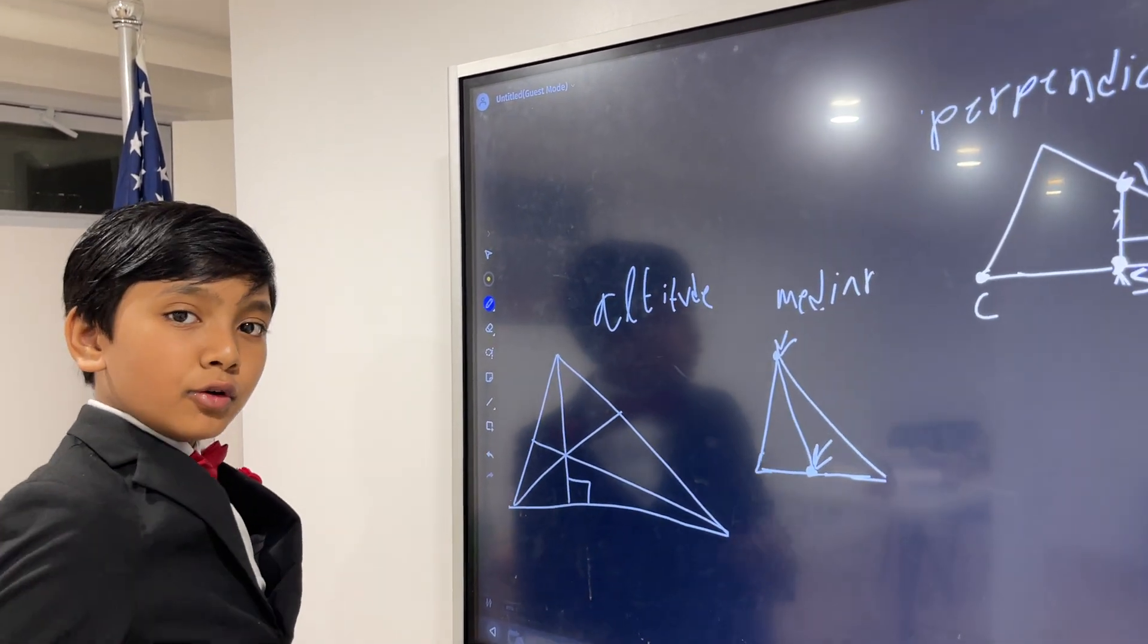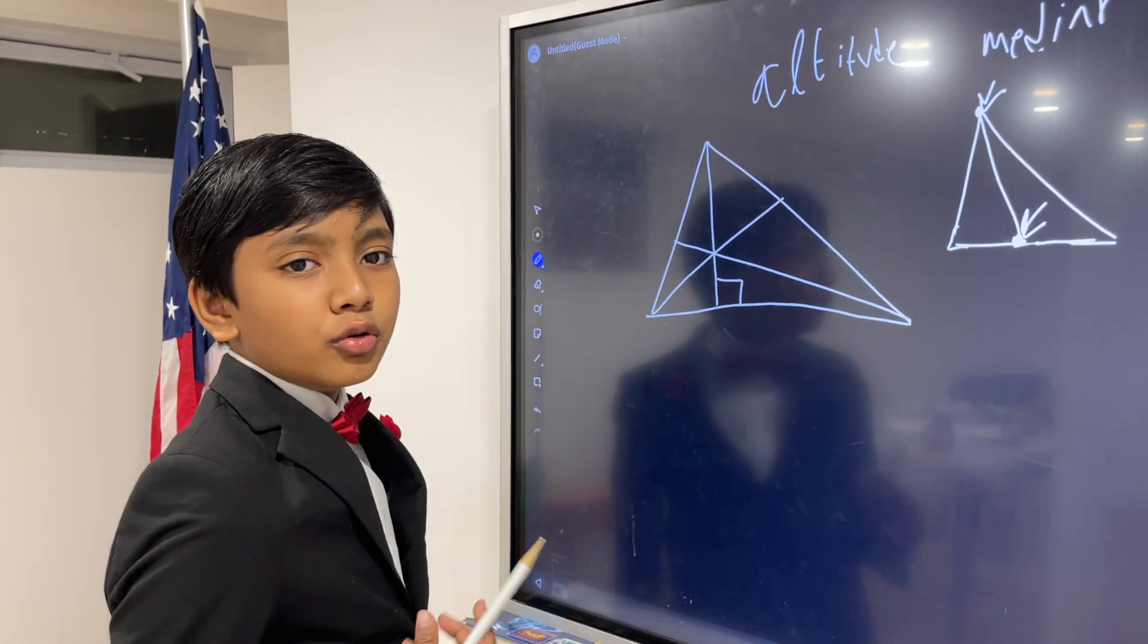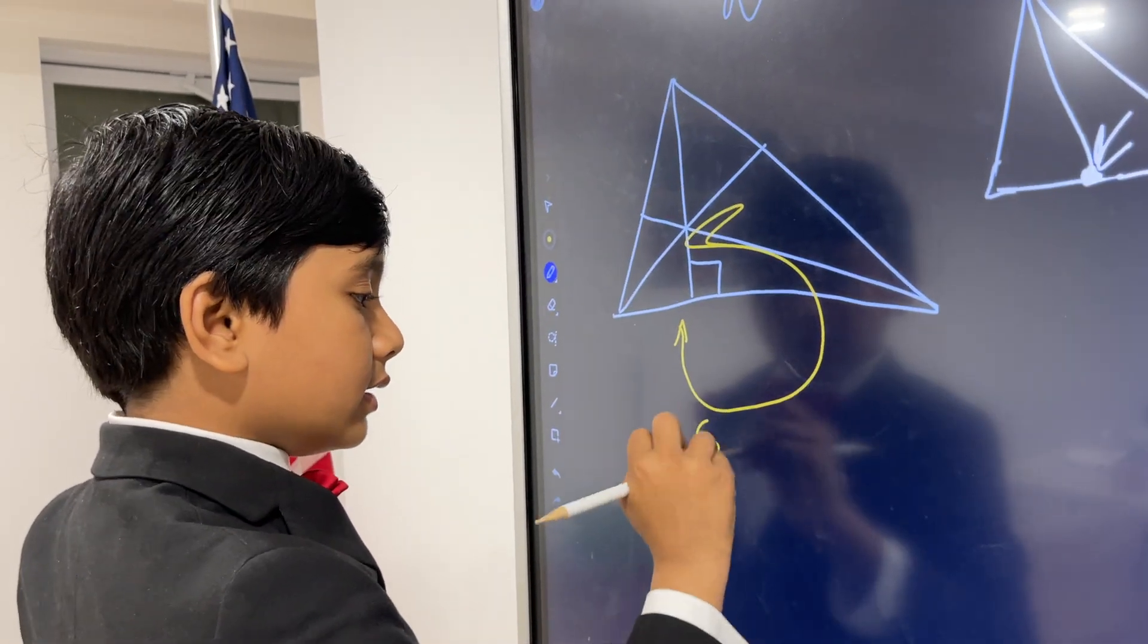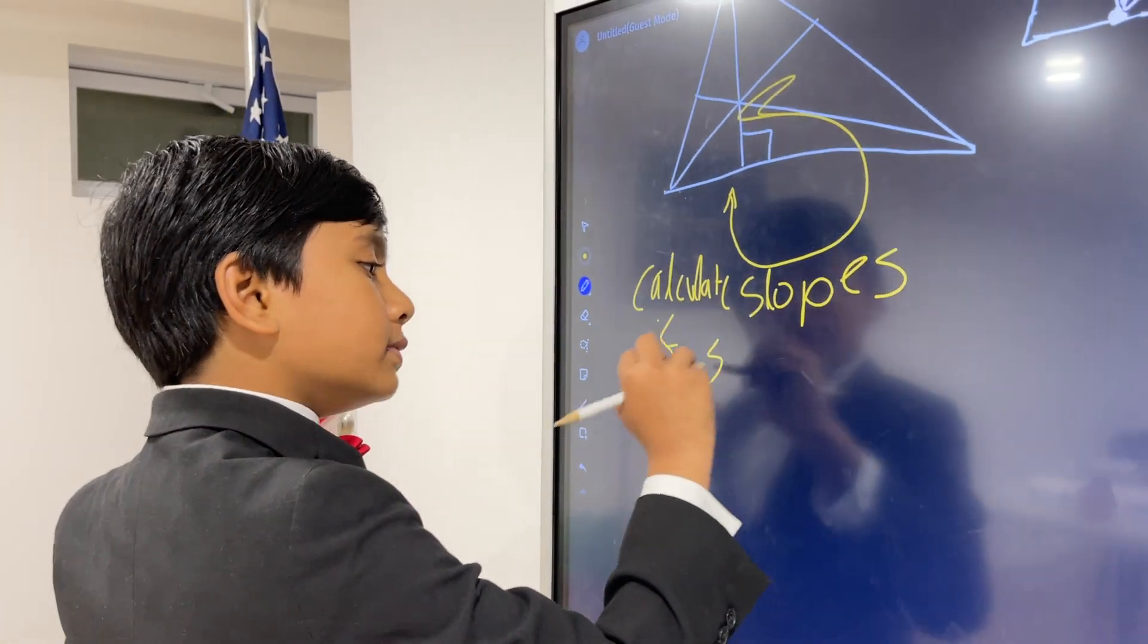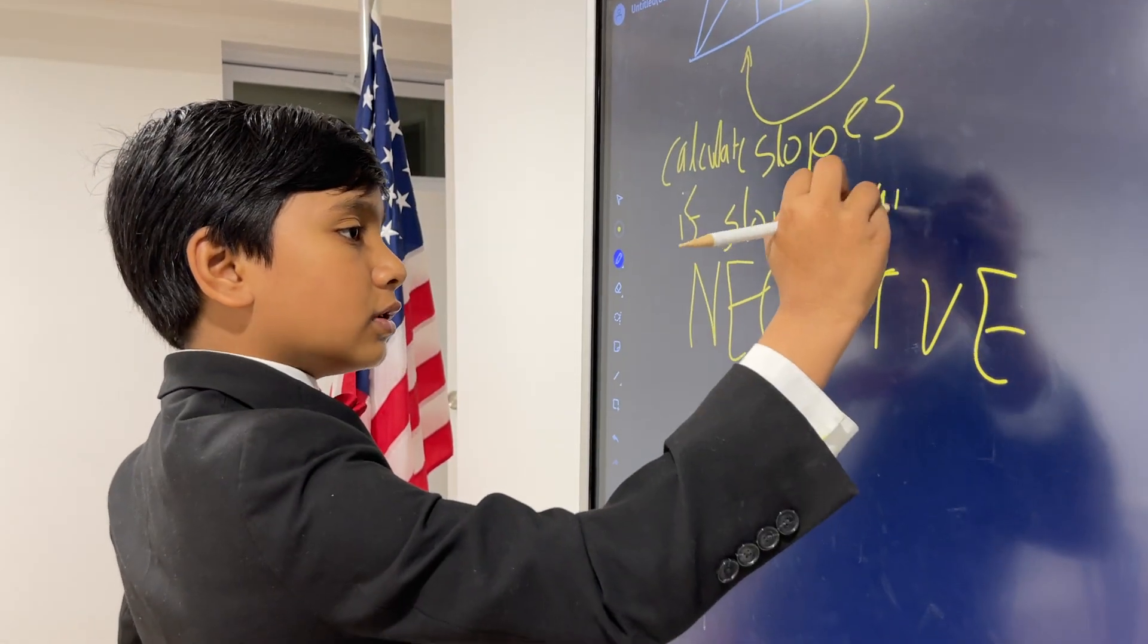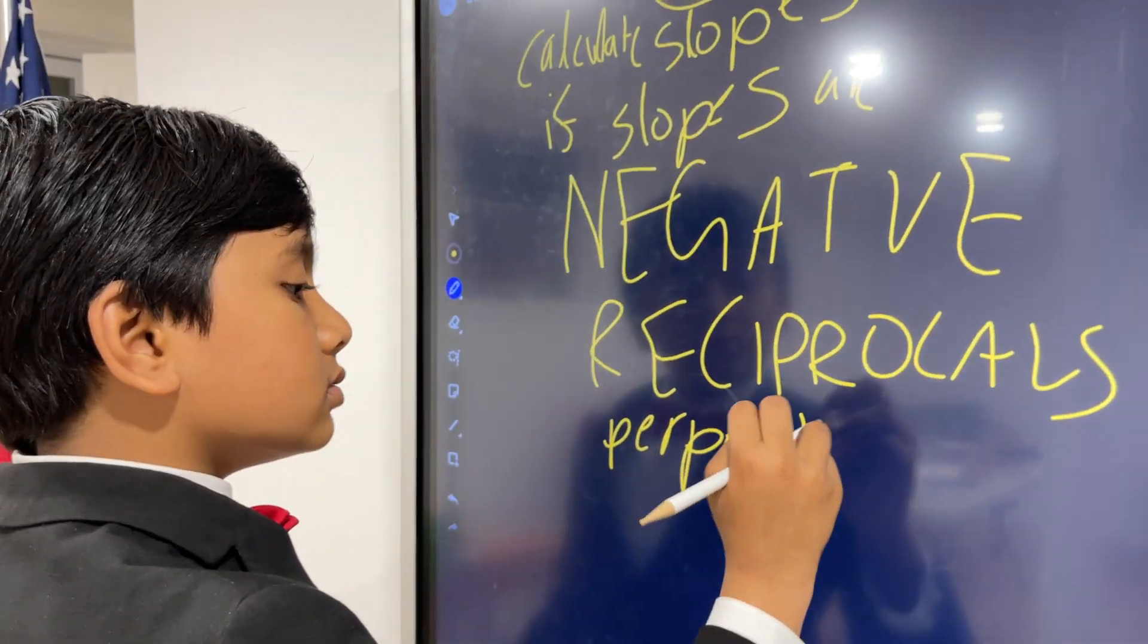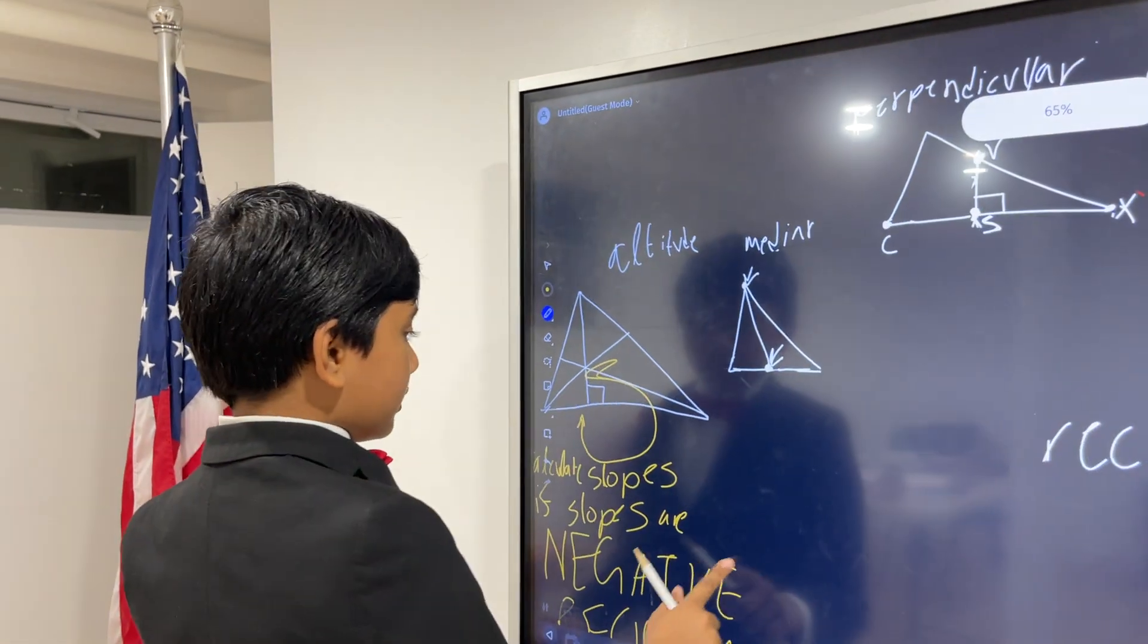First we're going to be covering how to prove if a line is the altitude of a triangle. We have a triangle with three altitudes over here. So how do we prove if something is an altitude? It's actually really simple. You just have to calculate the slopes of these two sides. And if the slopes are negative reciprocals—remember that if slopes are negative reciprocals—then that means they are perpendicular lines. We covered this in the last speed video. So that's how to find the altitude.